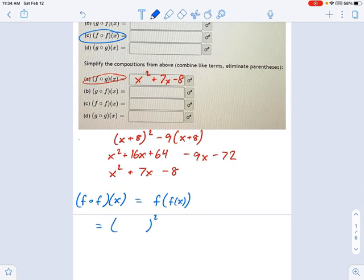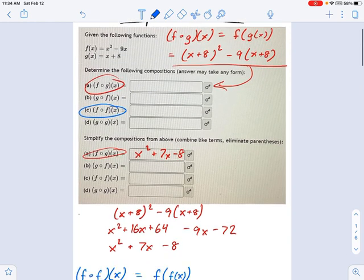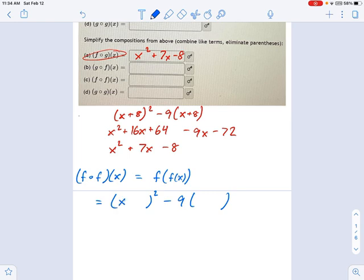And into that equation, in place of all the x's, I put x squared minus 9x. So x squared minus 9x, x squared minus 9x.